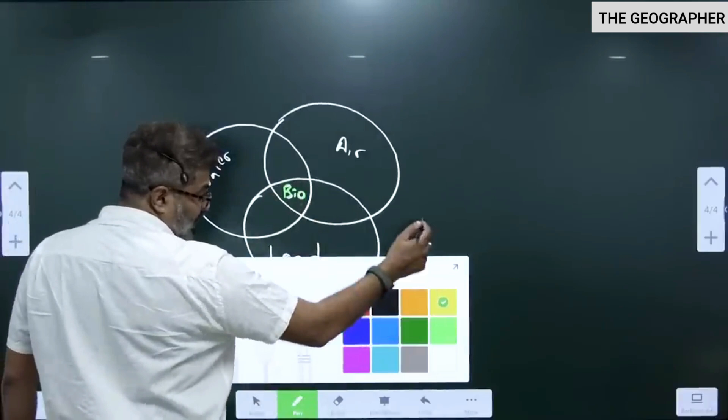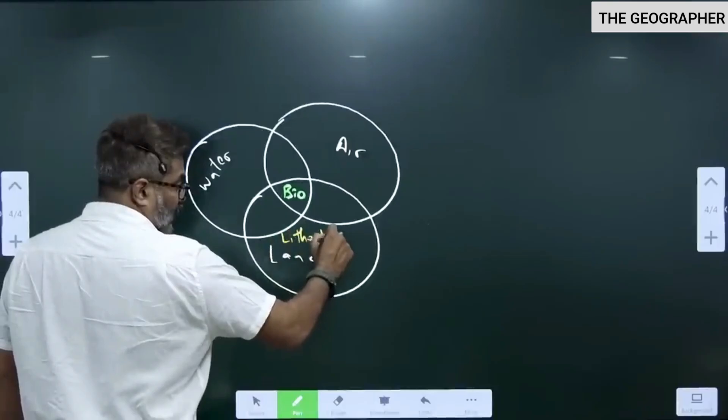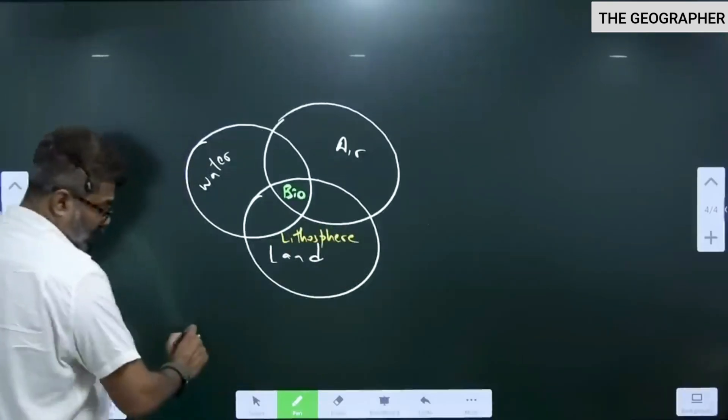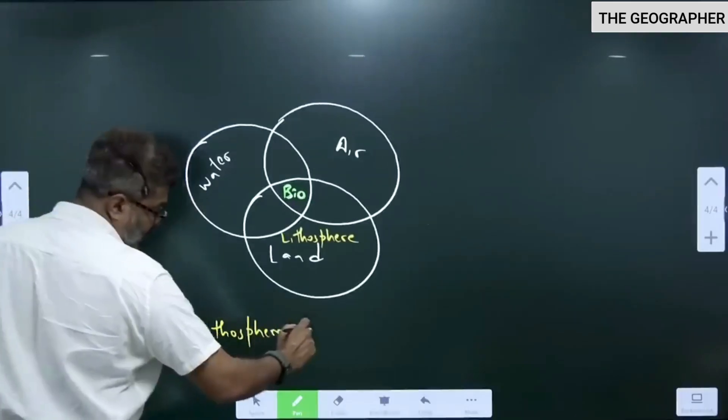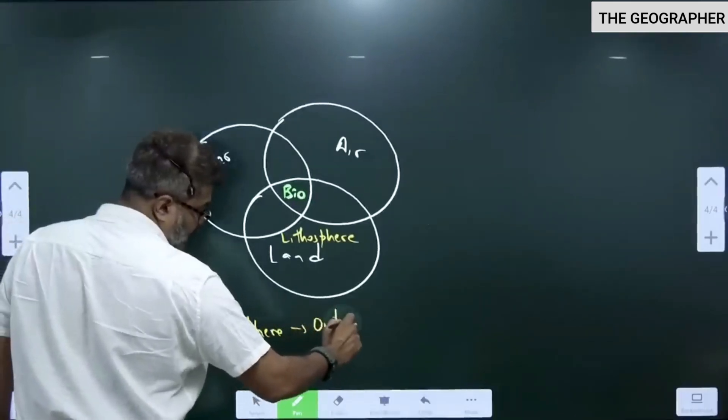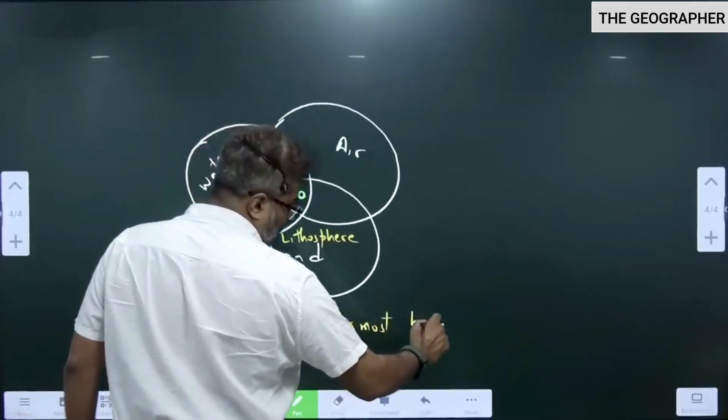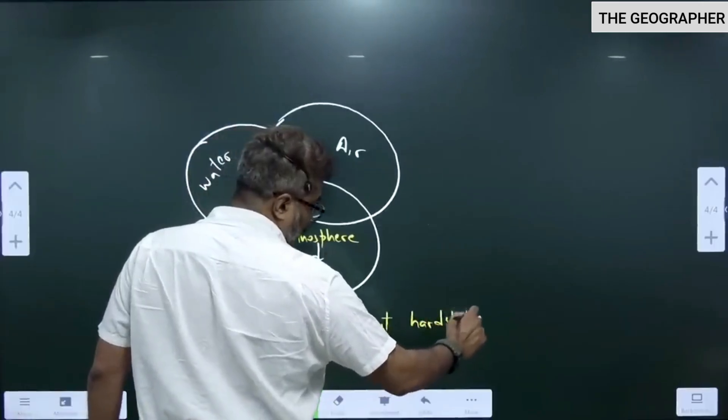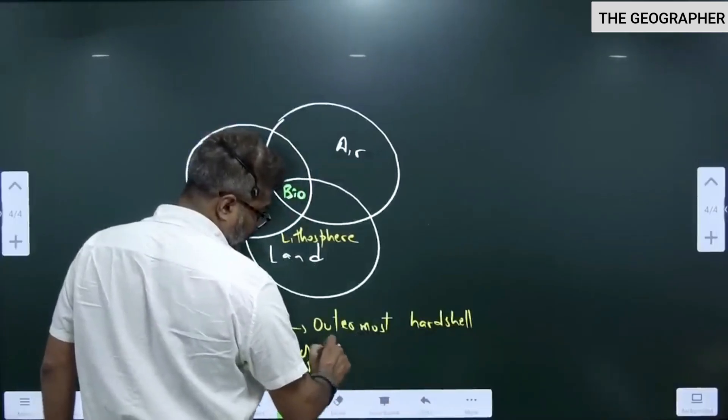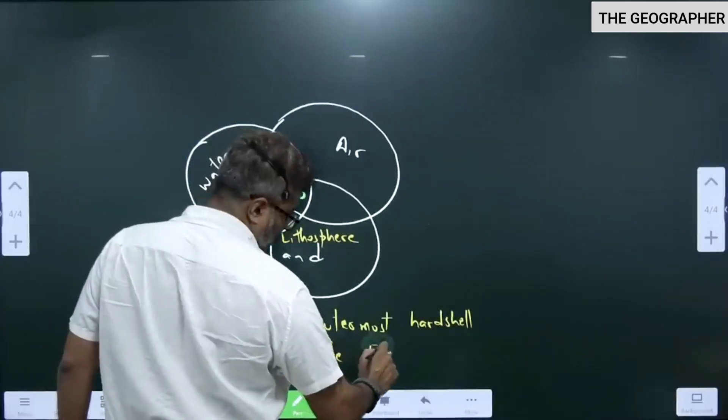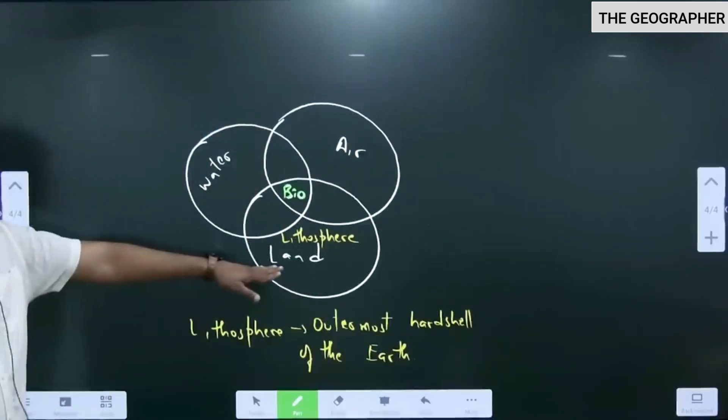Part of the surface of the earth on which we are living is lithosphere. So lithosphere is the outermost hard shell of the earth. What is lithosphere? Outermost hard shell of the earth. Please remember this - lithosphere, first word.